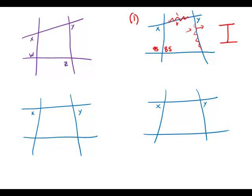Now forget about that information. Focus on statement number two. Statement number two tells us that angle z, the angle down here, is 125 degrees.